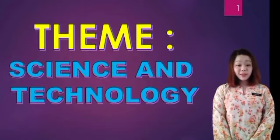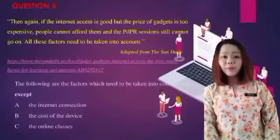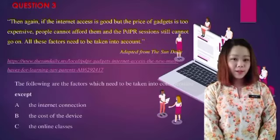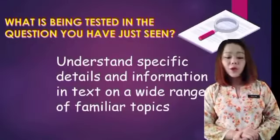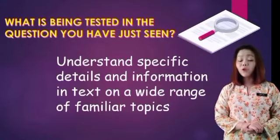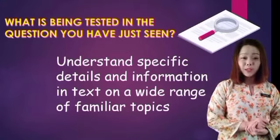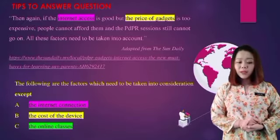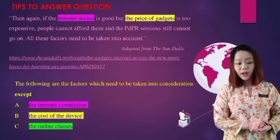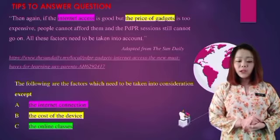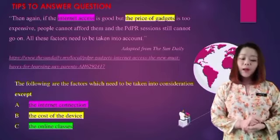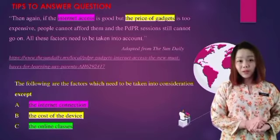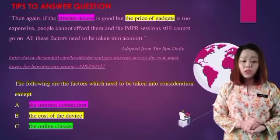The next questions are based on the theme of science and technology. Question number three is about PDPR. The question asks: which of the following are factors that need to be taken into consideration, except? This tests whether you understand specific details and information. Option A is the internet connection. From the text, internet access means the same as internet connection, so A is one of the factors. Option B is the cost of the device. From the text, the price of the gadget has a similar meaning to the cost of the device, so B is also one of the factors.